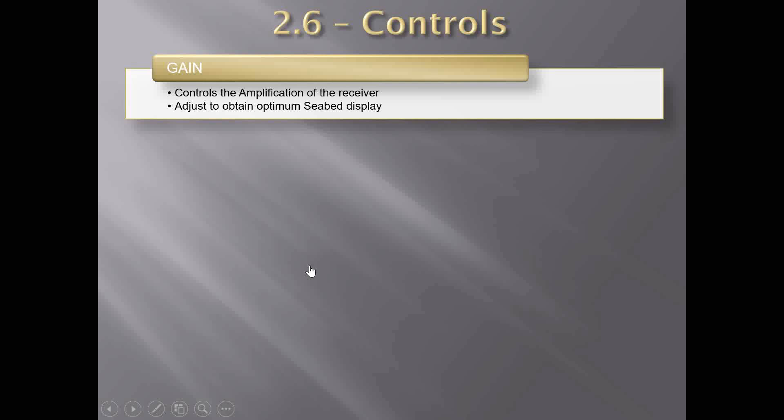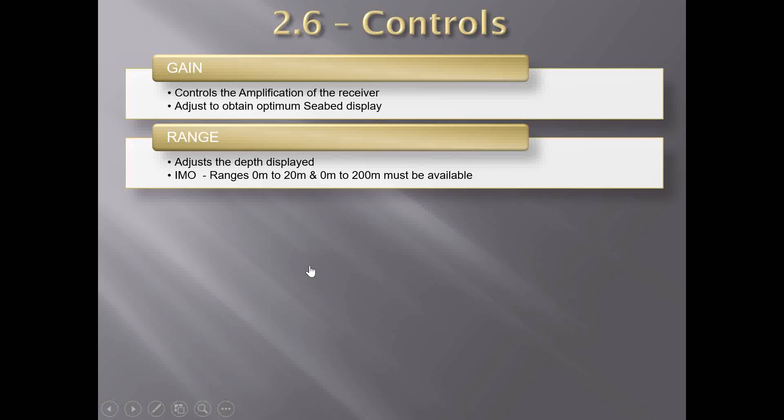The gain control switch controls the amplification of the receiver and is adjusted to obtain the optimum seabed display. The gain switch is also called the sensitivity switch. It controls the amplification of the received signal — the echo sounder sends a sound pulse to the seabed and receives the echo back, which is then amplified by the gain switch. It should be adjusted to give the clearest recording of the sea depth.